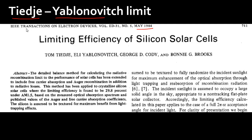This paper was published in Transaction of Electron Devices in 1984. Reading through the abstract: they are extending the detailed balance method first done by Shockley and Queisser in 1961, and including the other loss mechanisms I mentioned — free carrier absorption and Auger recombination — in addition to the radiative recombination mechanism.